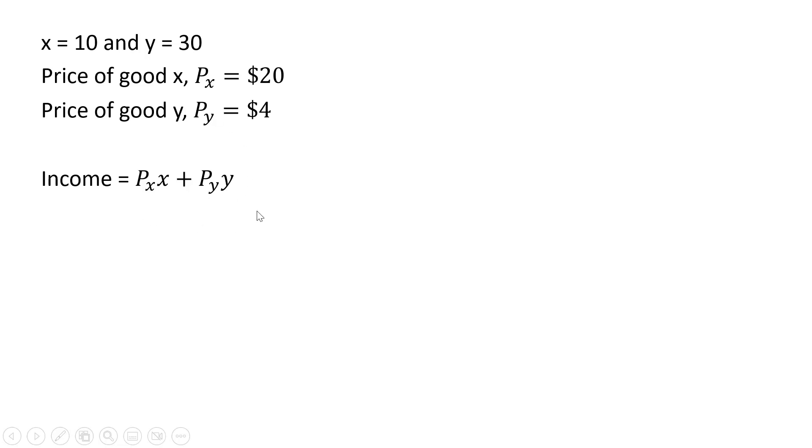So now we're going to make our substitutions into this formula. 20 for the price of good x, units of good x is 10, $4 for the price of good y, 30 units for good y. $200 plus $120 means the consumer has $320 of income. Okay, that's it.